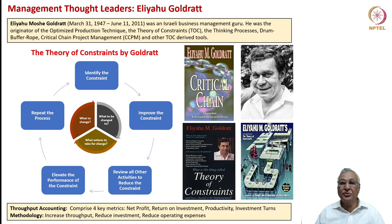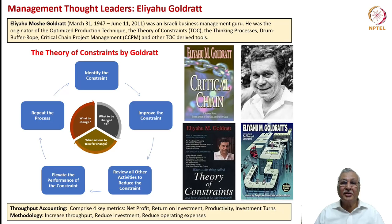Eliyahu Goldratt is another great operations-driven leader and strategist. His Theory of Constraints has been path-breaking in developing excellence in operations. He also brought out other books such as Critical Chain and showed how a company should move towards one single goal to achieve exemplary performance. His original methodologies include Optimized Production Technique, the Theory of Constraints, the Thinking Process, Drum-Buffer-Rope methodology, Critical Chain Project Management, and other TOC-derived tools.